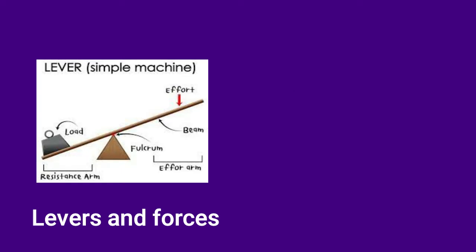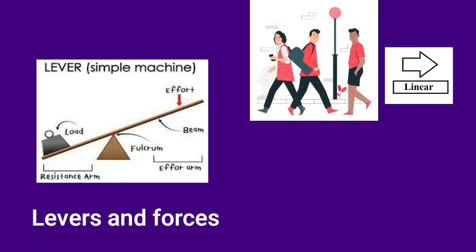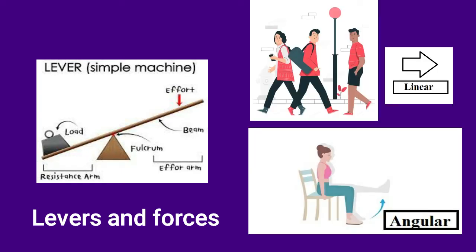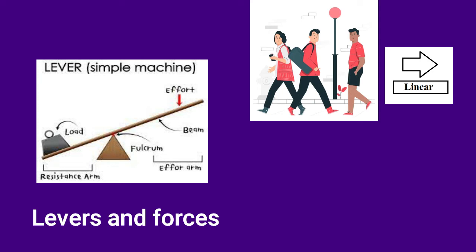When you use a lever, the motion that results might be linear or angular. Linear motion is movement in a straight line, whereas angular motion is rotational movement through an arc. All your joints produce angular motion, be it elbow flexion or knee extension. But you consider activities such as walking a linear motion, because in that case your body is considered one segment and is moving in a straight line.